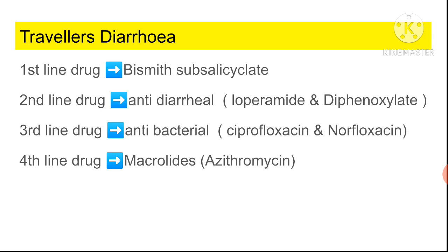If they ask about ciprofloxacin-resistant traveler's diarrhea, the drug of choice will be macrolides or azithromycin. Focus on the stem: first line is bismuth subsalicylate or antidiarrheal; if antidiarrheal-resistant, the answer is antibacterial; if cipro-resistant, the answer is azithromycin.